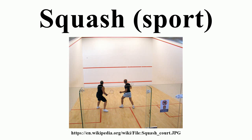Lob: the ball is hit softly and high on the front wall with a high arc so that it falls in a back corner of the court. Cross court: the ball is hit to the front wall from the right side to the left. Kill: the ball is hit hard and low on the front wall so that it travels no farther than half court. Trickle boast: a short boast where the ball is hit to the side wall at the front of the court. Squeeze boast: a more difficult shot hit from the front of the court when the ball is very close to the side wall, with the same effect as the trickle boast but more deceptive. Nick: the ball is volleyed or hit off a bounce to strike the front wall then the junction of the side wall and floor, giving the ball little or no bounce.